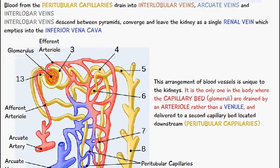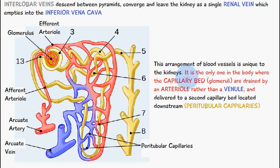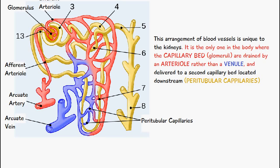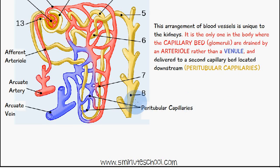What makes this arrangement of blood vessels unique is that it is the only system in the body where we have an initial capillary bed that is drained by an arteriole and not by a venule. That arteriole then drains into further capillaries — the peritubular capillaries — which is a second capillary bed located downstream. This is what makes the renal blood supply system different from other organs, and the blood then drains back through the veins and finally into the renal vein.